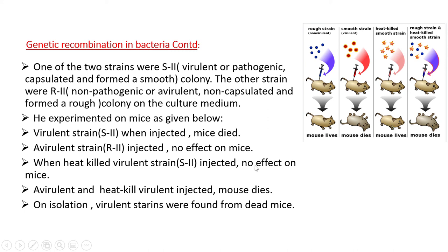But when he combined the avirulent R2 strain with the heat-killed virulent S2 strain and injected both into mice, the mice died. On isolation of bacteria from the dead mice, the virulent S2 strain was found, indicating that some material had transformed the R2 strain into a virulent form.